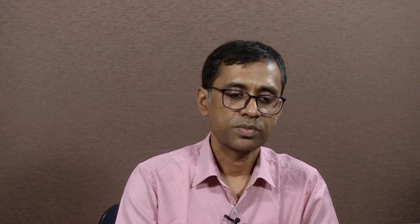If you convert forest land into agricultural land use, certainly the amount of moisture retention in the soil and the hydrological cycle will be completely disrupted, which will definitely affect watershed management. Improper agricultural practices sometime creates a lot of problem, deforestation due to increment of built-up areas, and road widening even inside forests — because you need transport and communications — can also create disturbances within a watershed.